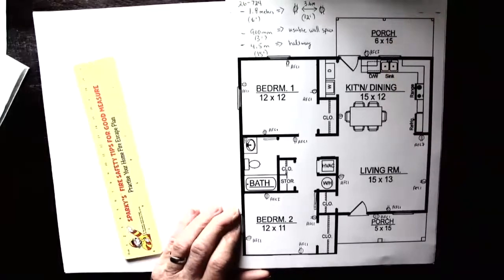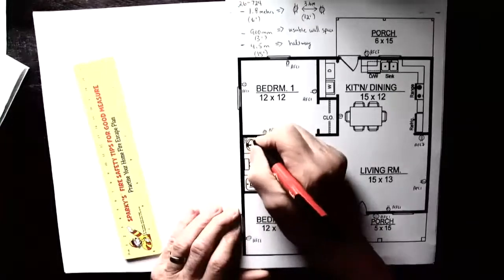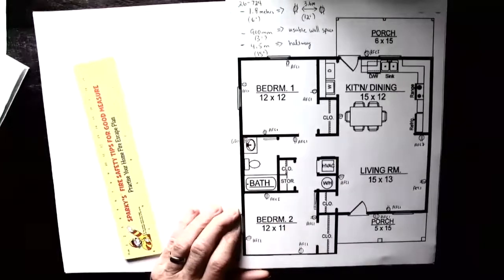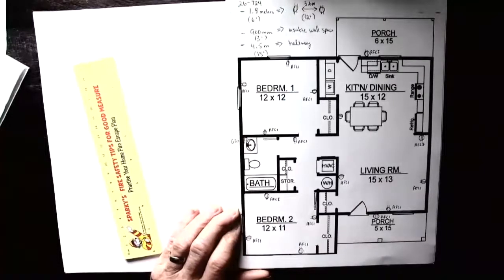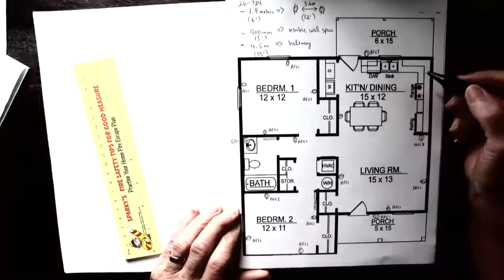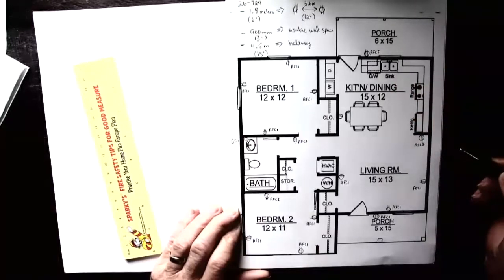Our next piece was GFCIs. Any receptacles located within 1.5 meters of a sink - that means this receptacle in the washroom is going to have to be GFCI. When we add these ones for the kitchen sink over here, we're going to need a GFCI.